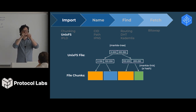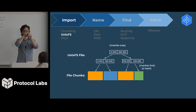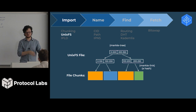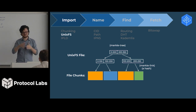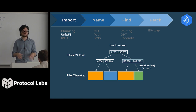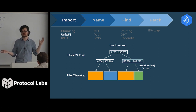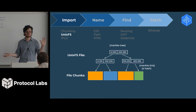The nodes in a UnixFS file specify byte ranges: bytes 0 through 200 on this side, 200 to 350 on this side, then 0 through 100, 100 through 200, et cetera. A Merkle tree is just a tree of hashes pointing to data, pointing to other data using hashes. You've probably used them if you're working in Ethereum, because that's how Ethereum is built — on Merkle trees.